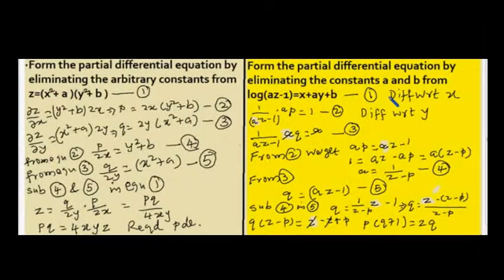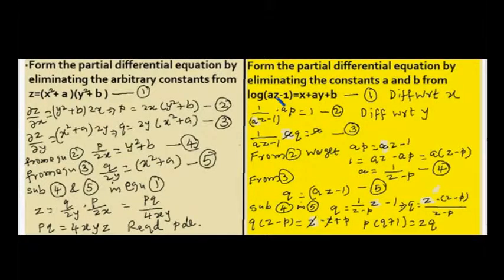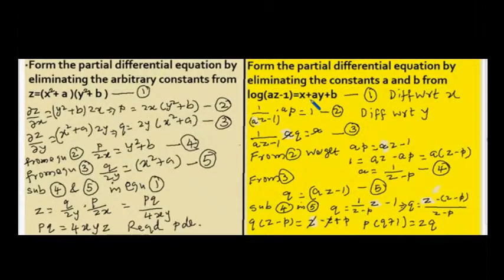Differentiating the given equation with respect to x: log of (az minus 1) is of the form log x, it is a function of a function. So, first differentiate in the form of log x — the differentiation of log is 1 by x, so here it is 1 by (az minus 1). Then differentiate the content inside the bracket: a is a constant, so the differentiation of z with respect to x is dou z by dou x, written as p. On the right hand side, the differentiation of x is 1, the differentiation of ay is 0, and the differentiation of b is 0. This equation is numbered equation two.